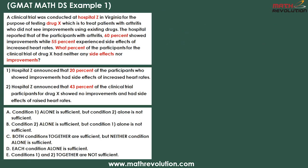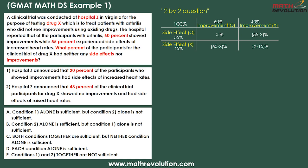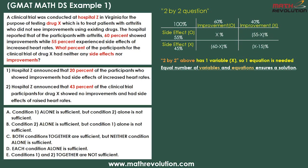This type of question is what we call 2 by 2, which occurs frequently on GMAT math. The information given in the question prompt becomes a 2 by 2 table that easily summarizes a lot of information. The 2 by 2 above has one variable x, so one equation is needed.